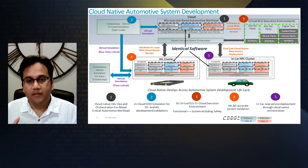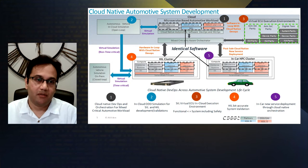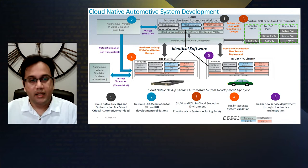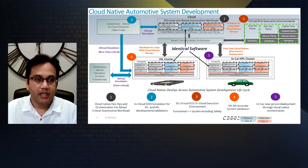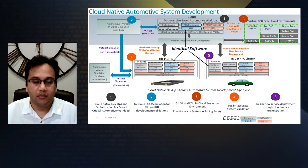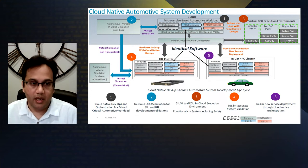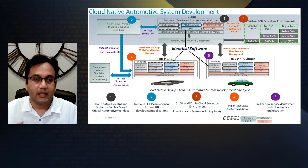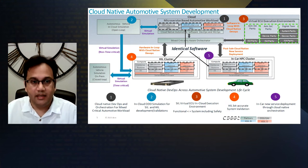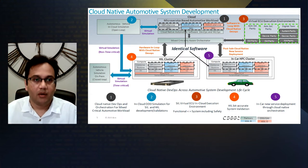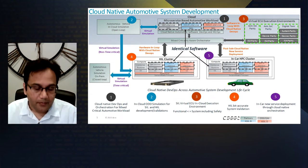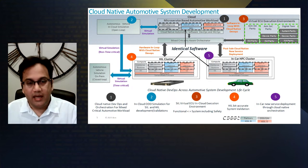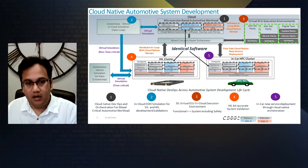Once you have verified, validated, and developed your automotive software in the cloud, the intent is to push it into what we call hardware-in-the-loop. This is where you have the actual physical ECU that will go into the car, and you validate it with the identical software developed in the cloud. You push it to the HIL cluster and validate it. Once done, that software goes into the car.